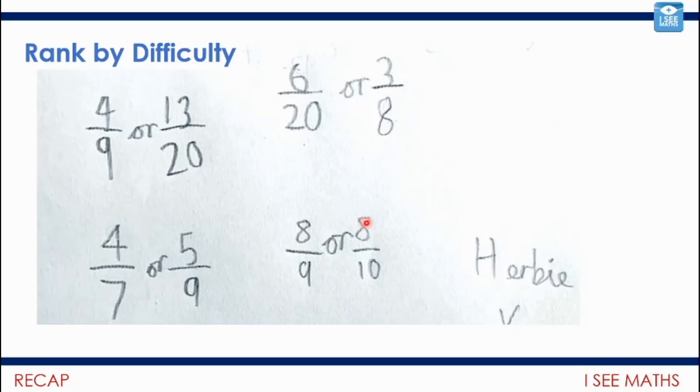Then I had a look at 8 9ths or 8 10ths. And just thought, well, how far away are we from 1? So we're 2 10ths away from 1 with 8 10ths, and we're only a 9th away with 8 9ths, so 8 9ths will be larger. Now, what about 4 7ths or 5 9ths? I think Herbie's done this one deliberately. Well, here, I thought I'm going to have to put these in the same denominator to compare them. And so I'm going to make them out of 63. So I'm going to multiply 7 by 9 to make 63. So I'll have to multiply the 4 by 9, 36 out of 63. And 9 7ths are 63, so 5 times 7 is 35. So just about 4 7ths is more than 5 9ths.